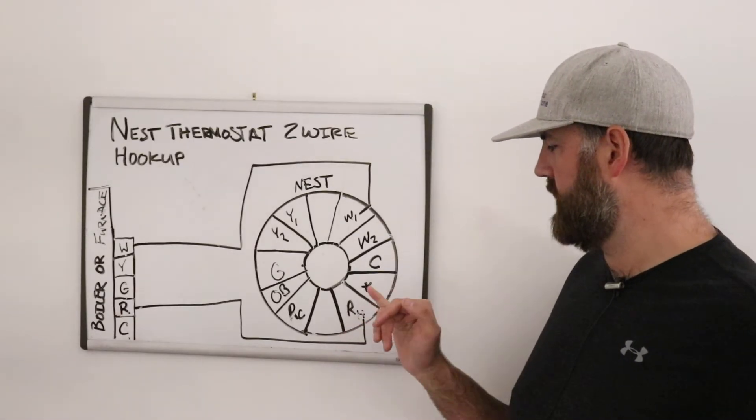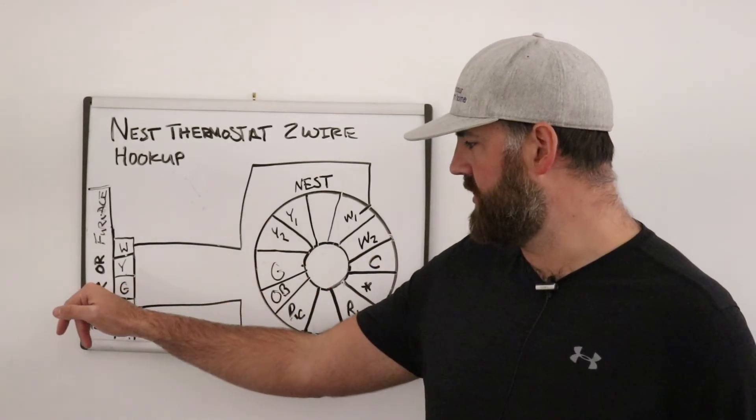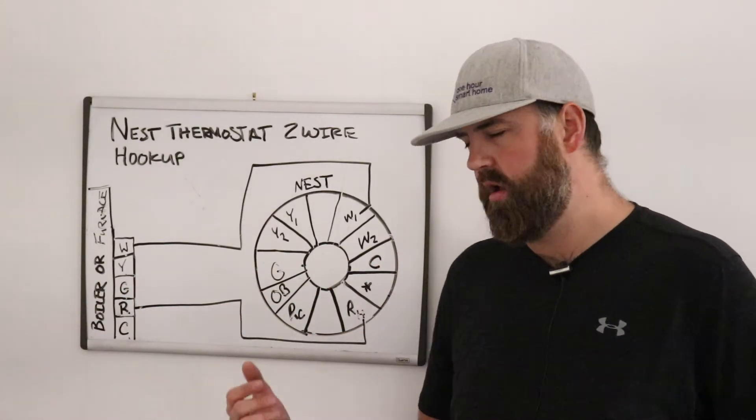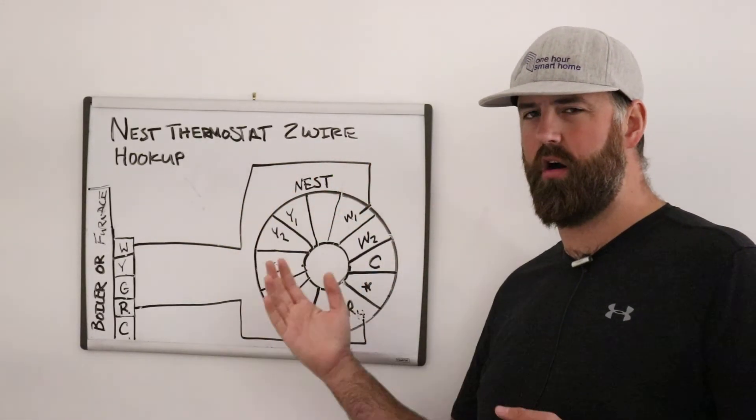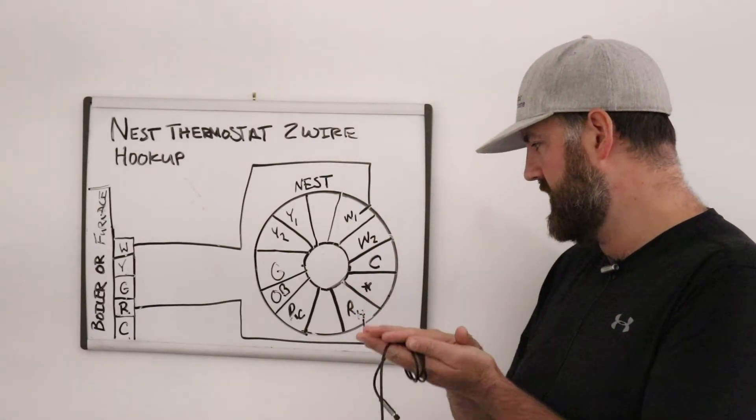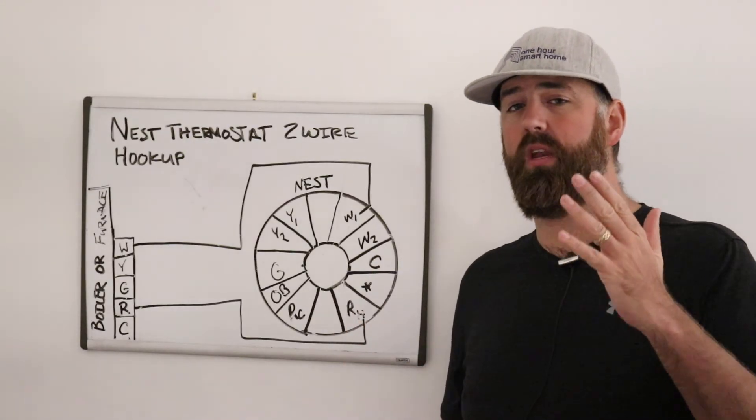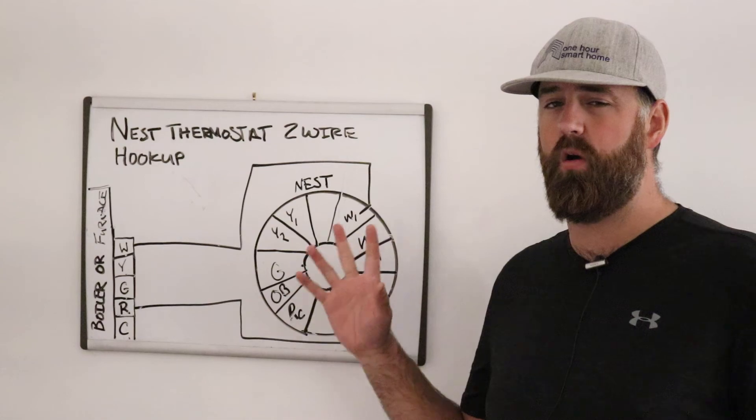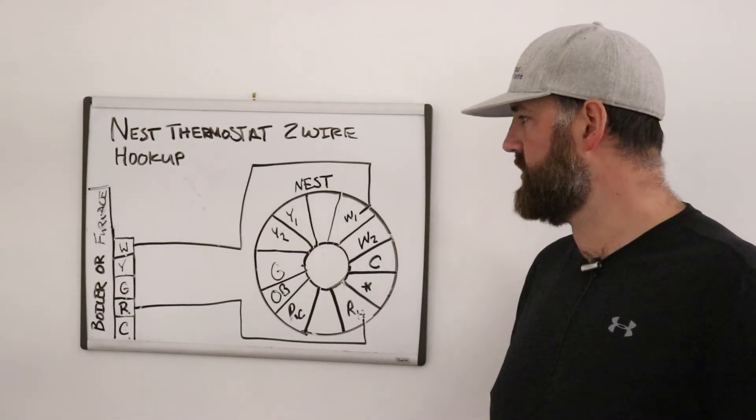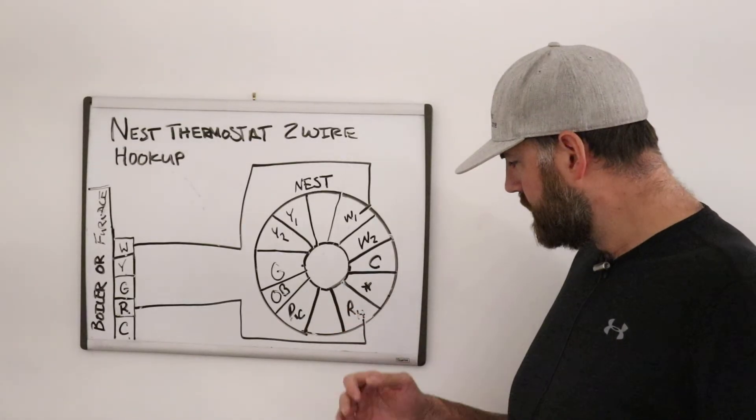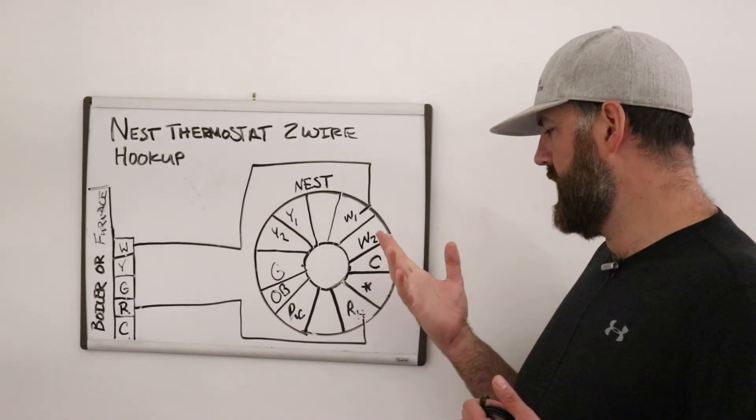In that case, you need a C wire, which allows R to always provide power through the nest into C and back to the neutral on the furnace without causing anything to happen, without the thermostat actually going on or switching down and turning on the heat. It basically just lets the battery charge up on the nest. Most people don't need it. We have a video that shows you how to connect to common wire in another video. You can watch that. Just search common wire installation one hour smart home on YouTube and that will pop up. But for most people, you don't need to worry about that. It's just a neutral wire.